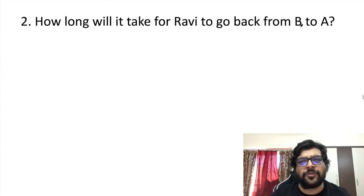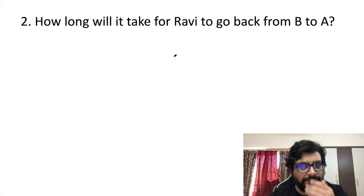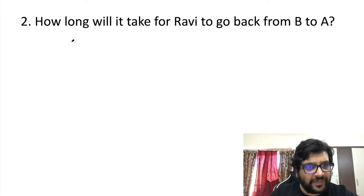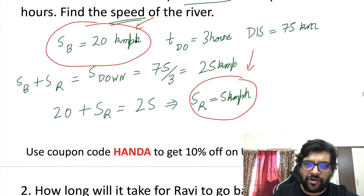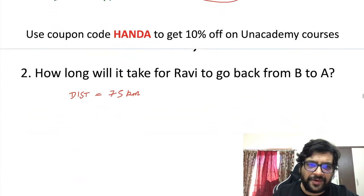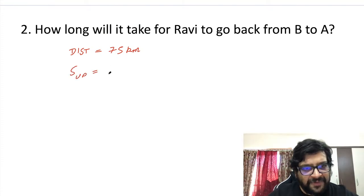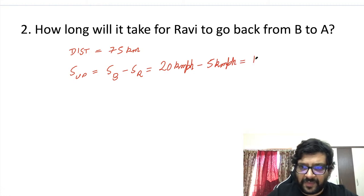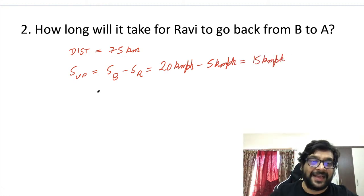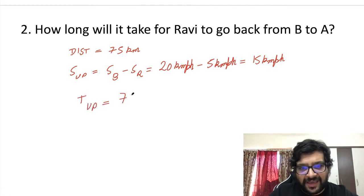How long will it take Ravi to go back from B to A? Distance is still 75 km. Now he is going upstream. Speed upstream = boat − river = 20 − 5 = 15 km/h. Time taken upstream = 75 / 15 = 5 hours.